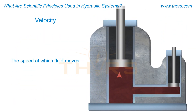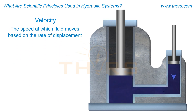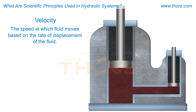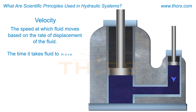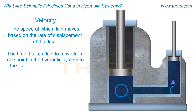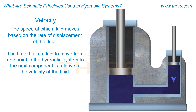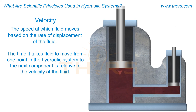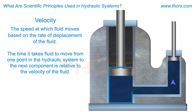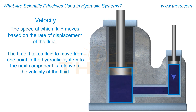Velocity is the speed at which fluid moves based on the rate of displacement of the fluid. The time it takes fluid to move from one point in the hydraulic system to the next component is relative to the velocity of the fluid. If you have the same amount of fluid passing through a large hose into a smaller hose, the velocity would increase due to the smaller area.